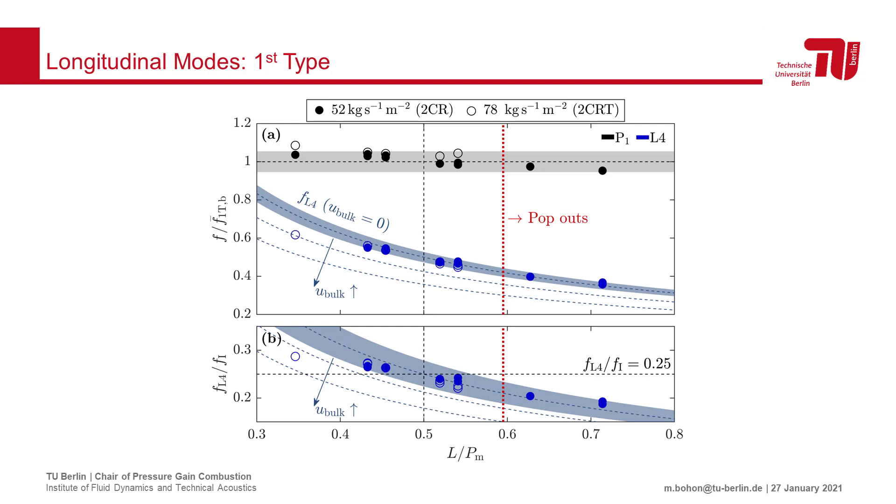Meanwhile, as we vary the length of the combustor, the calculated quarter wave frequency will also vary as shown in the blue shaded region. We can then compare our measured frequency in the blue markers, and see that our observations agree very well with the expected values.